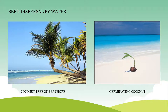Seed dispersal by water occurs in coconut trees also. Coconut trees generally grow along the banks of rivers or near seashores. When the coconuts fall in water, due to the fibrous nature of the fruit, they get floated along the waves of the water. Whenever the coconut touches the ground or soil after traveling a long distance, the seed germinates into a new plant.